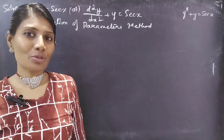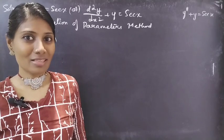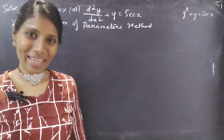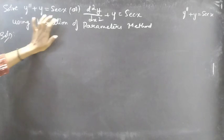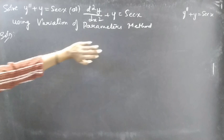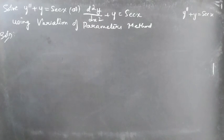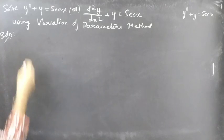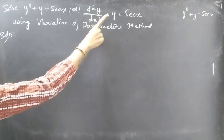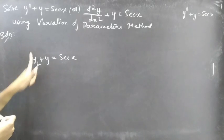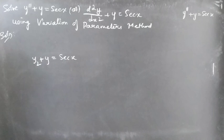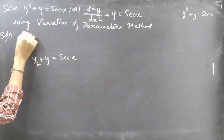Hello everyone, this is Zia Kalpana. In this video we're going to solve a differential equation using variation of parameters, second method — Part 2. So let's get going. We'll solve y'' + y = sec(x), or equivalently d²y/dx² + y = sec(x), using the variation of parameters method. This is a second-order differential equation.